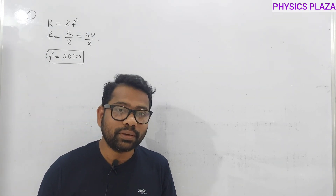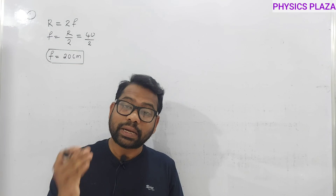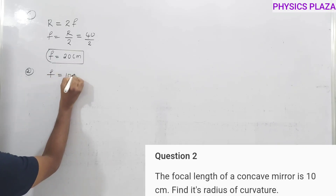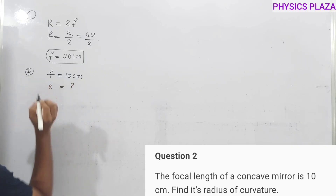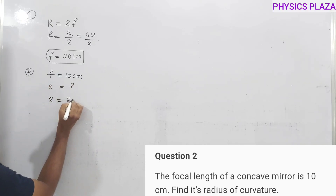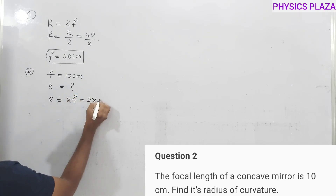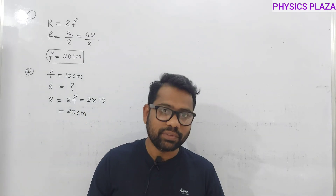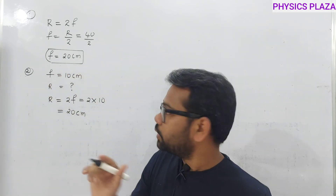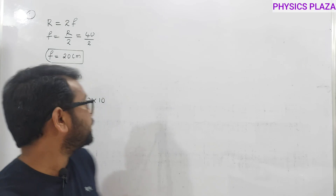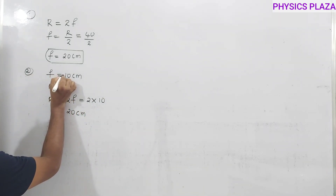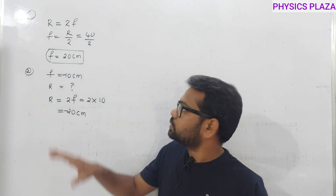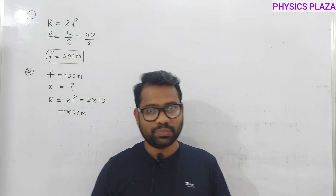Second numerical: focal length is given as 10 centimeters; calculate the radius of curvature. We know R = 2f = 2 × 10 = 20 centimeters. Strictly speaking, for a concave mirror the focal length is minus, so R is also minus. But most of the time when questions are based purely on the R = 2f formula, we calculate only the magnitude.